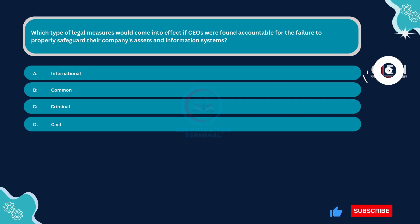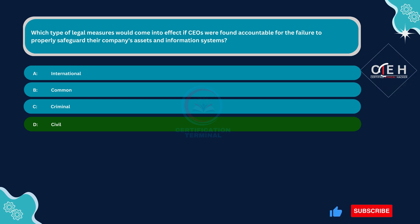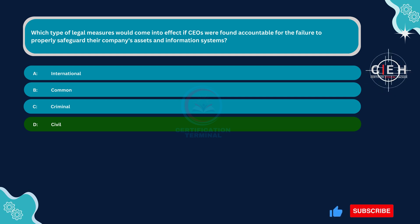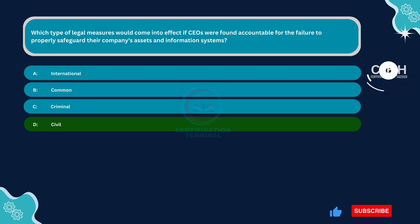The correct answer is Option D: civil. Civil legal measures involve lawsuits and legal actions between private parties seeking remedies for civil wrongs or breaches of duty. In the context of CEO accountability for cybersecurity failures, civil legal measures would likely involve lawsuits filed by shareholders, customers, or other affected parties seeking compensation for damages resulting from the failure to safeguard company assets and information systems. Civil actions could include claims for negligence, breach of fiduciary duty, or breach of contract. Therefore, this option is correct.